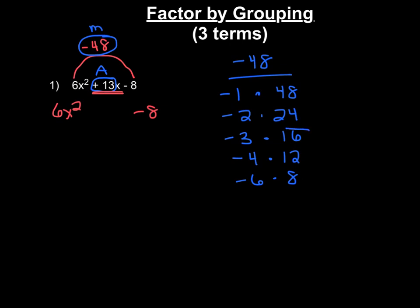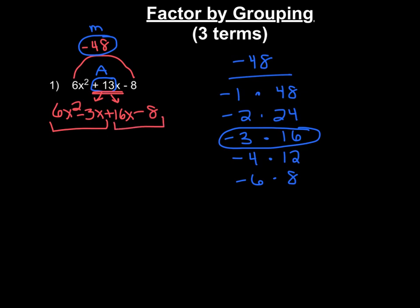Now if you look at these pairs of numbers, you can see right here this is the pair that adds up to positive 13. So we're going to take this middle term and split it up into two separate terms. We take these two numbers and attach this x to them, so we're going to have a negative 3x and a positive 16x. Now that we have an even set of numbers, we can group together the first two and the last two. Out of the first two terms, we can pull out a 3x, and that leaves us in parentheses: 6x squared divided by 3x is 2x, bring down the subtraction sign, 3x divided by 3x is 1. So we have 3x times (2x minus 1).